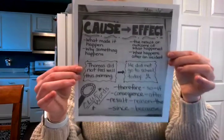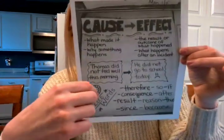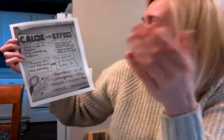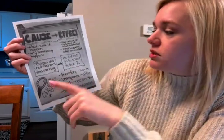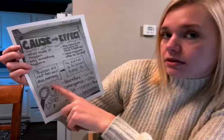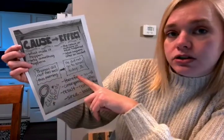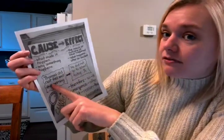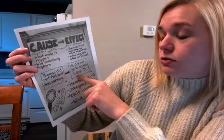In the bundle there is a nice little chart here that shows what cause and effect is. The cause is what made it happen — why something happened, what leads up to it. The effect is the result of what happened, what happens after the incident. For example: Thomas did not feel well this morning. The cause — the effect — he did not go to school. Because he did not feel good, he did not go to school.